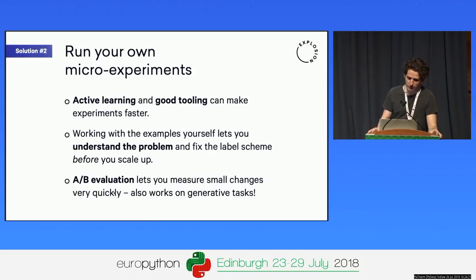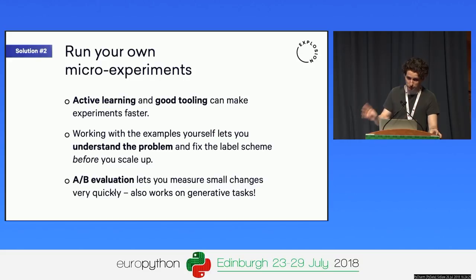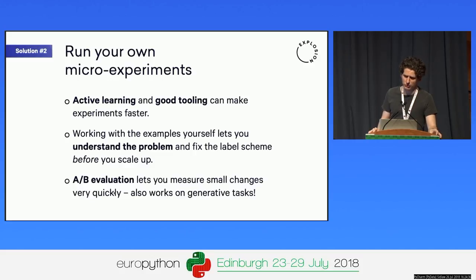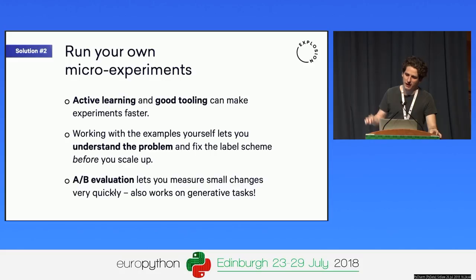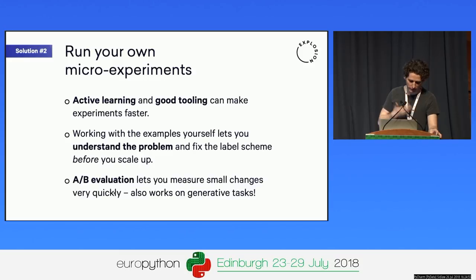If you're able to run specific annotation projects much quicker — in a few hours — and decide whether something is going to work, you can explore the space of different modelling options. Even as a data scientist yourself, you should have a workflow that lets you have an idea, label some data, and try it out — so you don't have to convene a meeting, convince your boss, wait for annotators, get the data back, and discover it didn't work. Labelling a few hundred examples yourself gives you a much better perspective on whether something is likely to work.